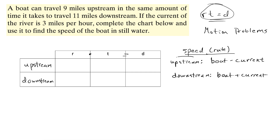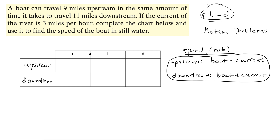This fact works for all these problems — with the boat and the current, or the plane and the wind. It's always the vessel minus the current for upstream and vessel plus the current for downstream. That's one consistent thing across all these problems.